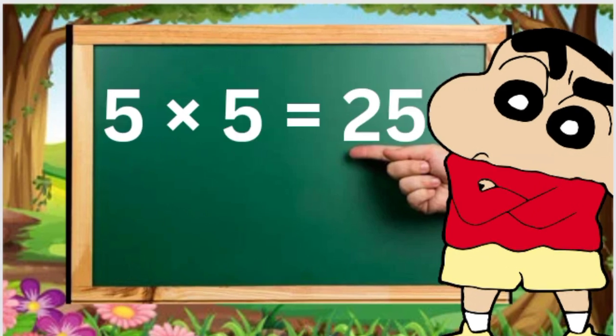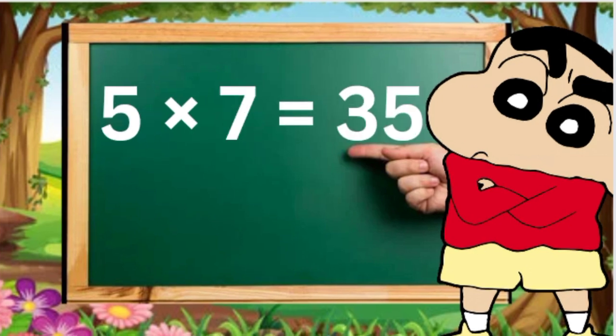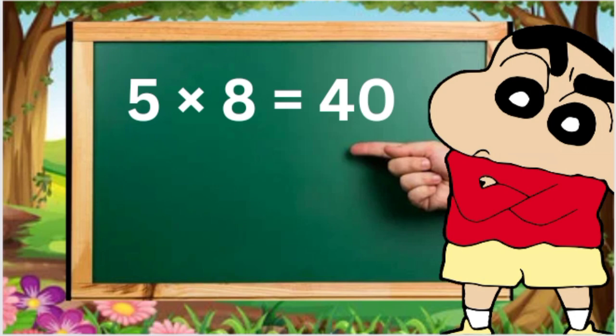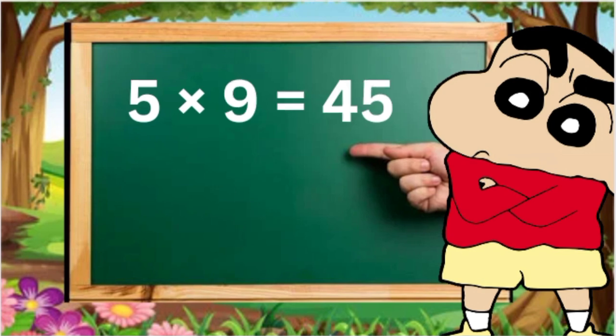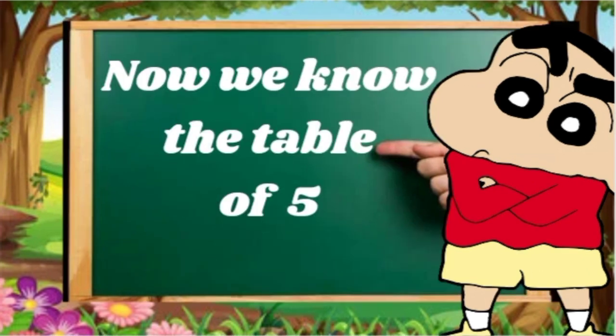5 6s are 30, 5 7s are 35, 5 8s are 40, 5 9s are 45, 5 10s are 50. Now we know the table of 5.